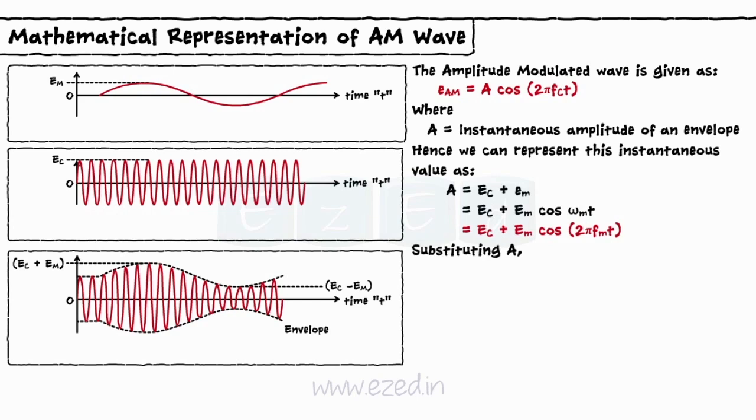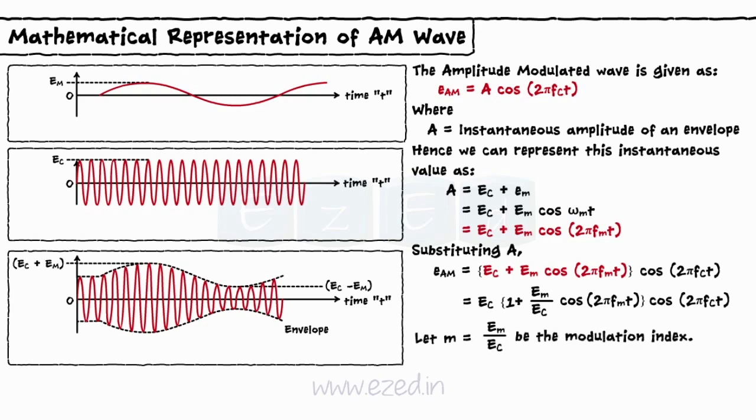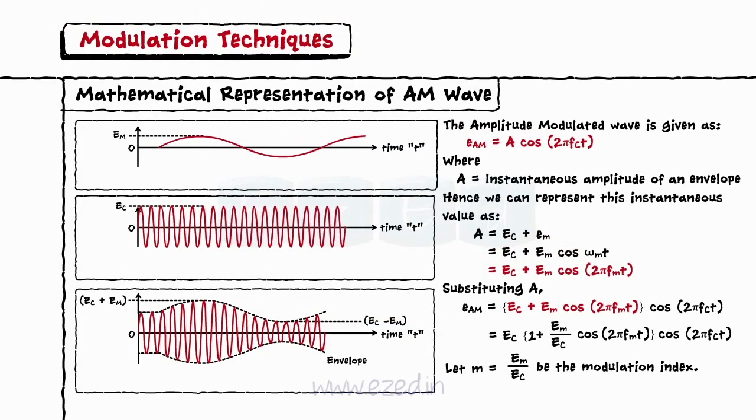Substituting the value of A in equation of AM wave, we get the equation for amplitude modulated wave. The ratio of amplitudes of the modulating signal to the carrier signal is called as modulation index m and is equal to EM upon EC. Thus, the AM wave is represented as shown.